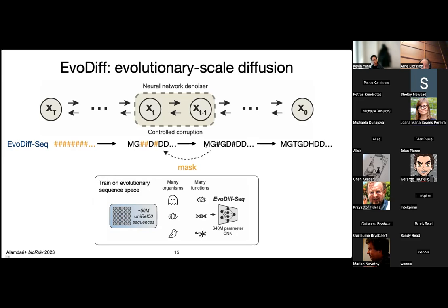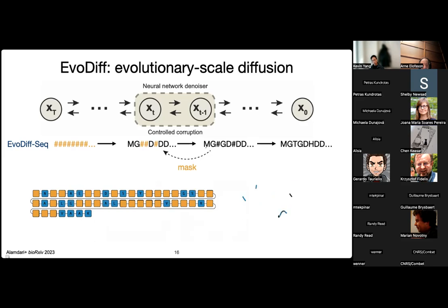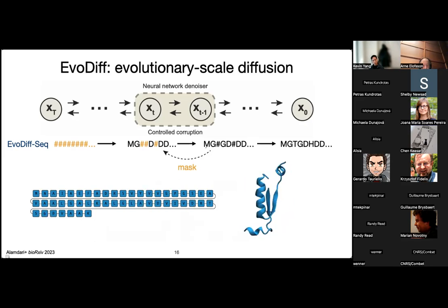To show an example of what this looks like at generation time: you start from all masks, and at every time step, run the corrupted sequence through the model, pick a masked location, and decode it based on the model's predictions. The sequence shown here is a real example generated from EvoDiffSeq. The structure was produced by running the partial sequences through AlphaFold and making an animation — that's mostly just for visual effect, except for the last one, which is the actual AlphaFold prediction for the full generated sequence.